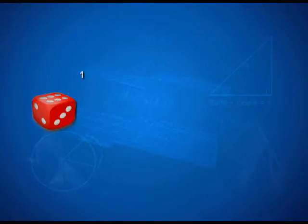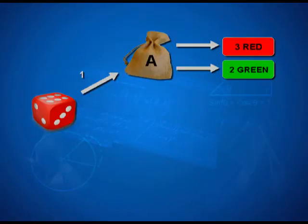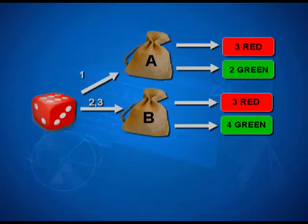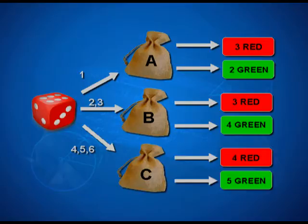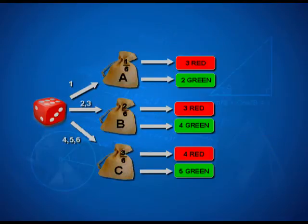If the die shows 1, we pick a ball from bag A which contains 3 red and 2 green. If the die shows 2 or 3, we pick a ball from bag B which has 3 red and 4 green. If we get 4, 5 or 6, the ball is picked from bag C which has 4 red and 5 green. The probability of selecting bag A equals the probability of getting a 1 on the die, so P(A) = 1/6. The probability of bag B is 2/6, and the probability of bag C is 3/6, since 4, 5 or 6 can show up in 3 favorable ways.